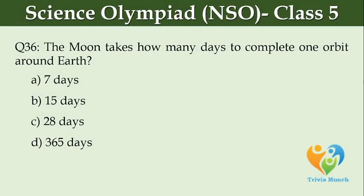The moon takes how many days to complete one orbit around Earth? Option A, 7 days. Option B, 15 days. Option C, 28 days. Option D, 365 days.